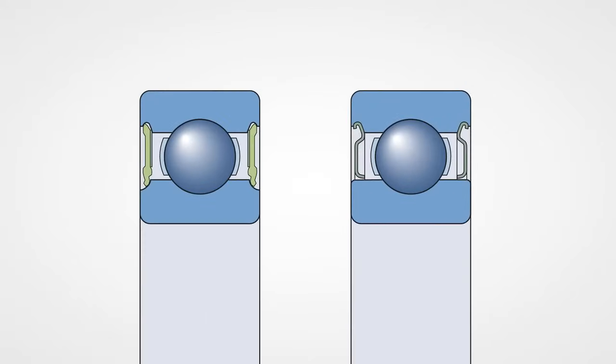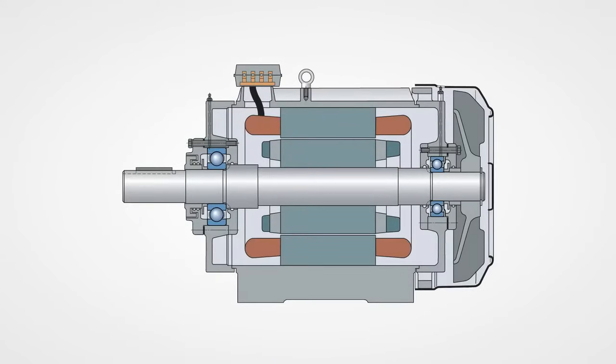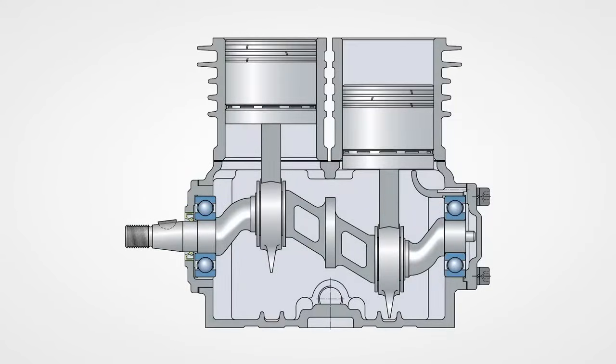Completely sealed or shielded bearings are pre-greased during the manufacturing process and cannot be re-lubricated. They are commonly used in small electric motors, gearboxes, conveyor support rollers, and similar equipment.